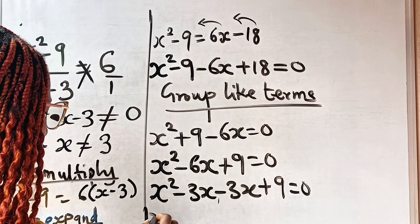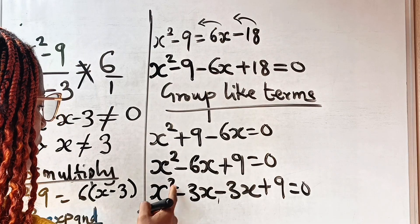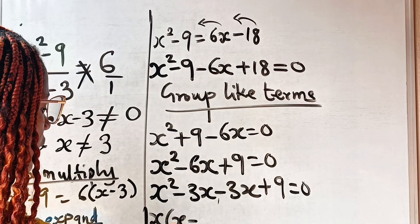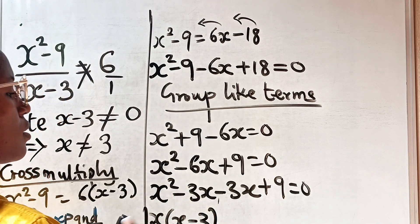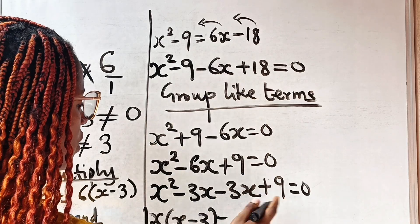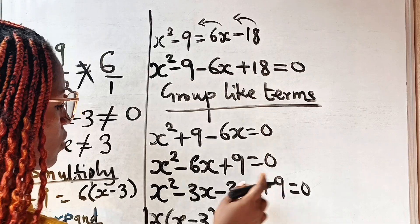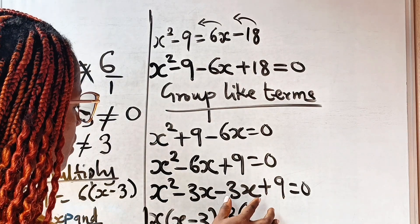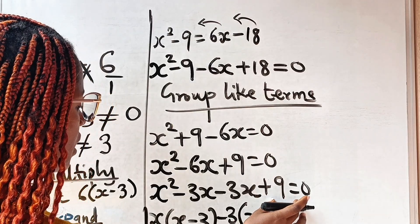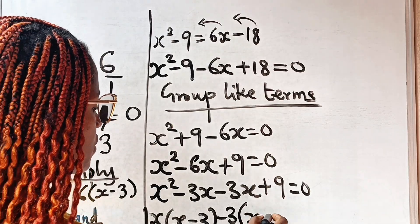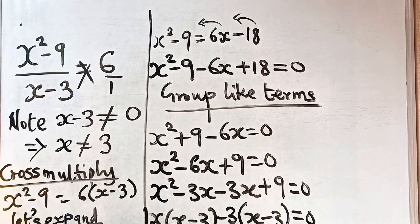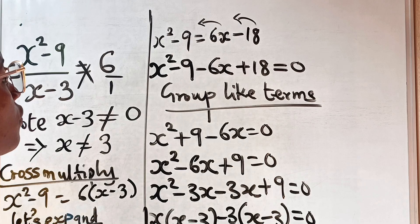Moving forward, we group: from the first two terms the common factor is x, so x squared divided by x is x and negative 3x divided by x is negative 3, giving x(x minus 3). For the last two terms, the common factor is negative 3, so negative 3x divided by negative 3 is x and positive 9 divided by negative 3 is negative 3, giving negative 3(x minus 3).